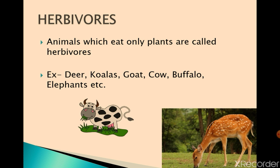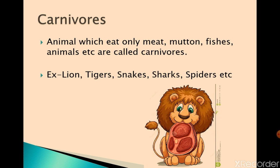Let us explore what herbivores are. Animals which eat only plants are called herbivores. For example, deer and buffalo both eat plants, so they are called herbivores. The second category is carnivores — animals which eat only meat, mutton, fishes, other animals, etc. Examples of carnivores are lion, tigers, snakes, sharks and spiders.